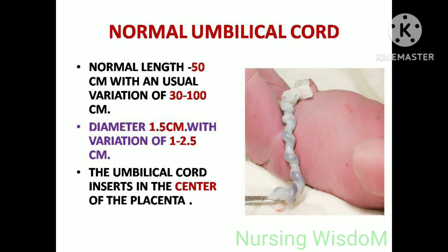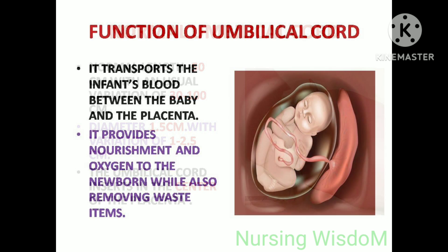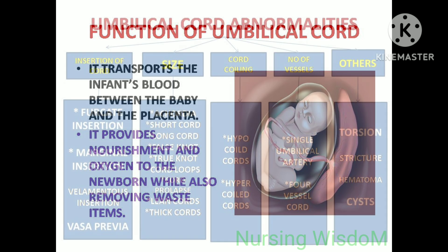Normal umbilical cord: the normal length is 50 cm with a usual variation of 30 to 100 cm. The normal diameter is 1.5 cm with a variation of 1 to 2.5 cm. The umbilical cord inserts in the center of the placenta. Its function is to transport the infant's blood between the baby and the placenta, providing nourishment and oxygen to the newborn while also removing waste items.